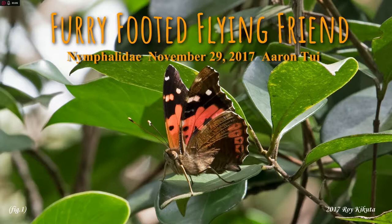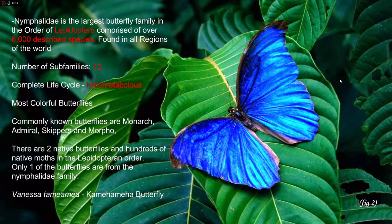I'm presenting on Nymphalidae butterflies, also known as the brush-footed butterflies. Nymphalidae butterflies are the largest butterfly family found in the order Lepidoptera. They're comprised of more than 6,000 described species — species that have been recorded, studied, and published. This family can be found in all regions of the world. There are 12 subfamilies, and these butterflies, like the rest, exhibit a complete life cycle — meaning they come from an egg, transition to a larval stage, then a pupal stage, then the adult.